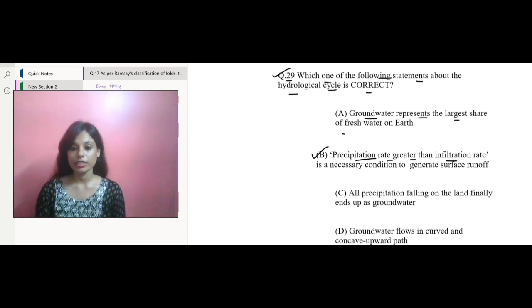All precipitation falling on the land finally ends up as groundwater - No, this is not correct. Last one, groundwater flows in curved and concave upward path - No, this is also not correct. Let's go with option B, that is precipitation rate is greater than infiltration rate.